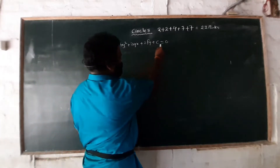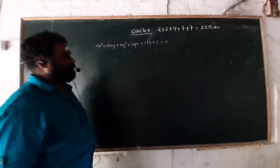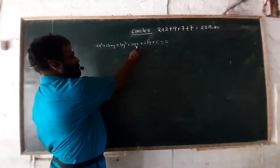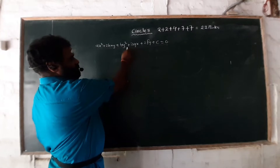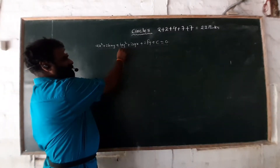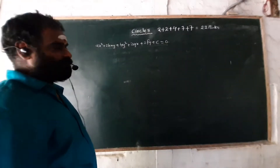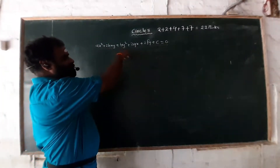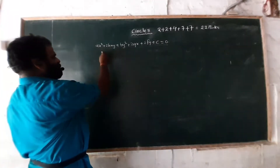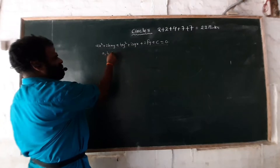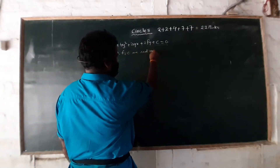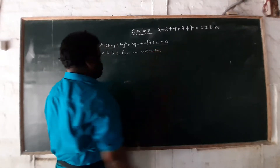We already know about this equation from our previous class on pair of straight lines — in first year, in the pair of straight lines topic, we saw this equation. Here, a, h, b, g, f, c are real numbers.